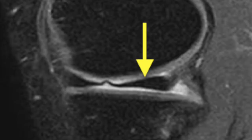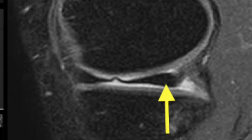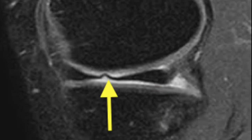The meniscus has three free edges: the superior surface (the femoral surface), the tibial or inferior surface, and the free edge which is the apex. We have to see whether the signal intensity change is reaching up to any of these surfaces — only then can it be classified as a meniscal tear proper.